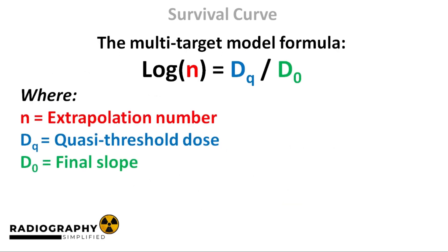The parameters in the multi-target model can be related in this expression: log N equals quasi-threshold dose divided by the final slope, or log N = DQ / D0. Remember, we have focused on the multi-target model to keep things simple, but there are other models used to describe cell survival. An even more recent model is the linear quadratic model. We won't go into that for now to keep the series as concise as possible — we'll explore it in future, more advanced series.